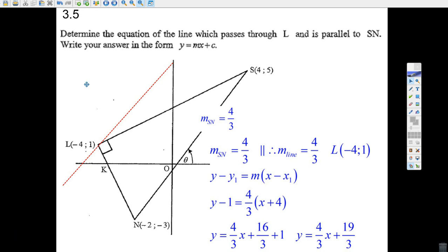Continuing on with question 3 of paper 2, 2023, here we go. Determine the equation of the line that passes through L but is parallel to SN, parallel to SN.